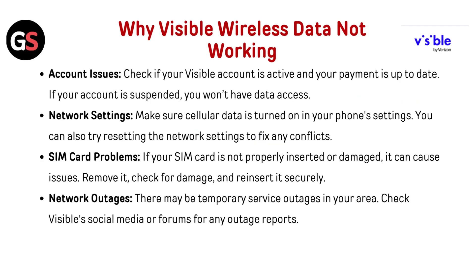Account Issues: Check if your Visible account is activated and your payment is up to date. If your account is suspended, you won't have data access. Network Settings: Make sure cellular data is turned on in your phone settings. You can also try resetting the network settings to fix any conflicts.